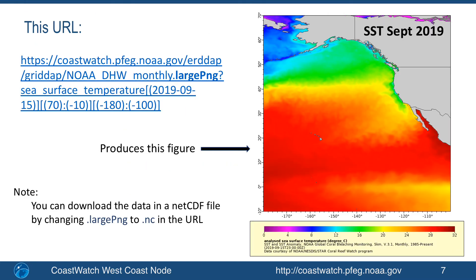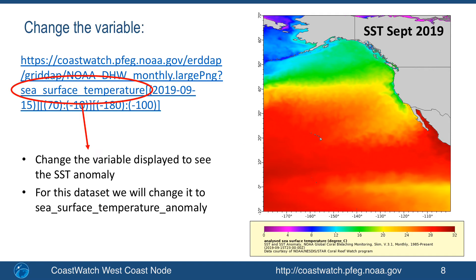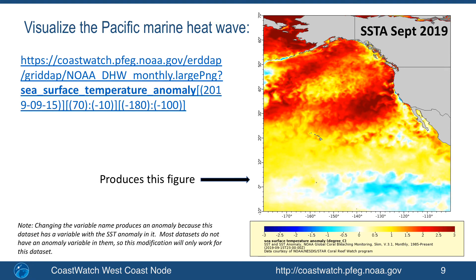This image here was produced by the URL on the left, which was the URL we were looking at in the previous slide. Now let's modify the graph by making a simple change to the URL. Let's change the variable name from sea surface temperature to sea surface temperature anomaly. By making that one simple change in the URL, we are now looking at the sea surface temperature anomaly for this region, and the red values in the map are showing the extent of the marine heat wave that has developed in the Pacific in the last few years.